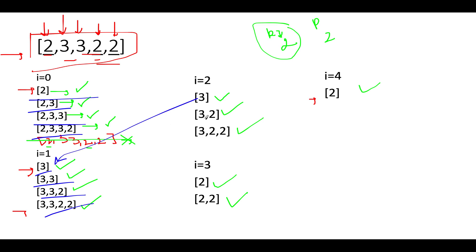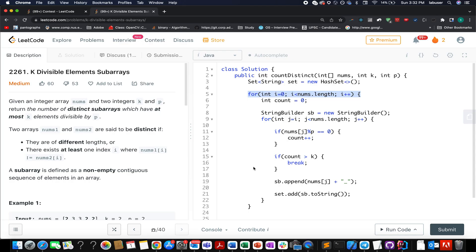Skipping the repeated ones, we continue: the ninth, tenth, and eleventh distinct subarrays — skipping any repeated entries. In total we have eleven distinct valid subarrays. Let's now walk through the coding section, following exactly the same steps as described in the presentation.